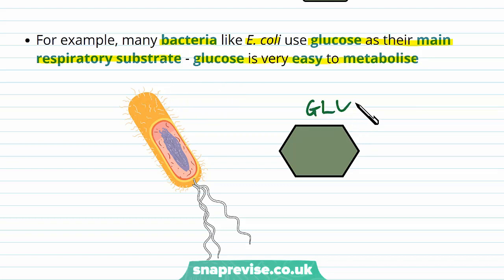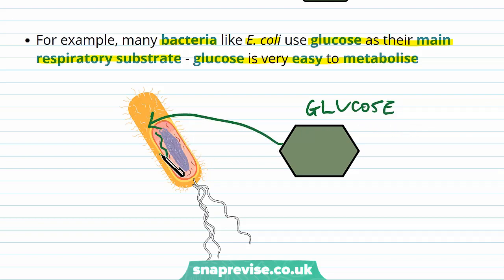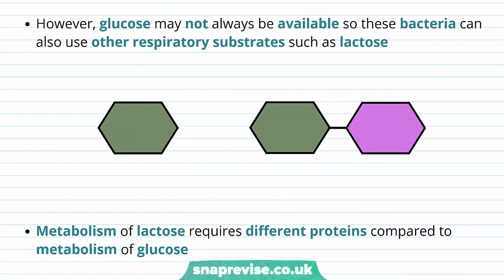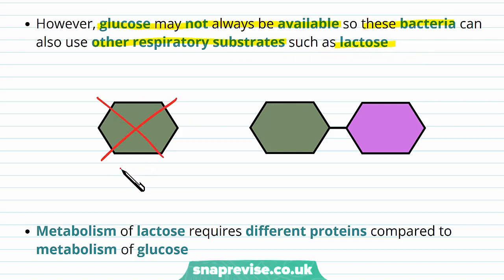So if glucose is in their local environment, the bacterial cells will simply take up the glucose and put it through the process of respiration, and through this process they can get their energy or ATP. However, bacteria live in lots of different environments and sometimes glucose might not always be available. So these bacteria can actually use other respiratory substrates — for example, lactose.